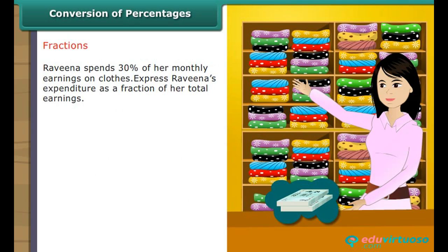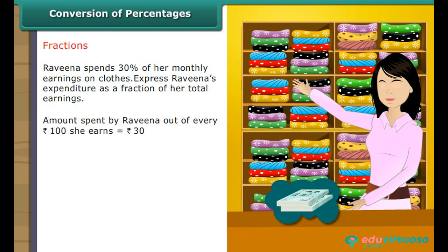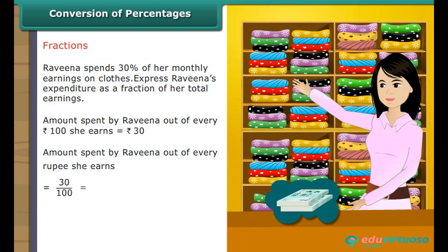Fractions and Decimals: Raveena spends 30% of her monthly earnings on clothes. Amount spent out of every Rs. 100 she earns is Rs. 30. Expressed as a fraction: 30/100 = 3/10. Raveena spends 3/10 of her earnings on clothes.